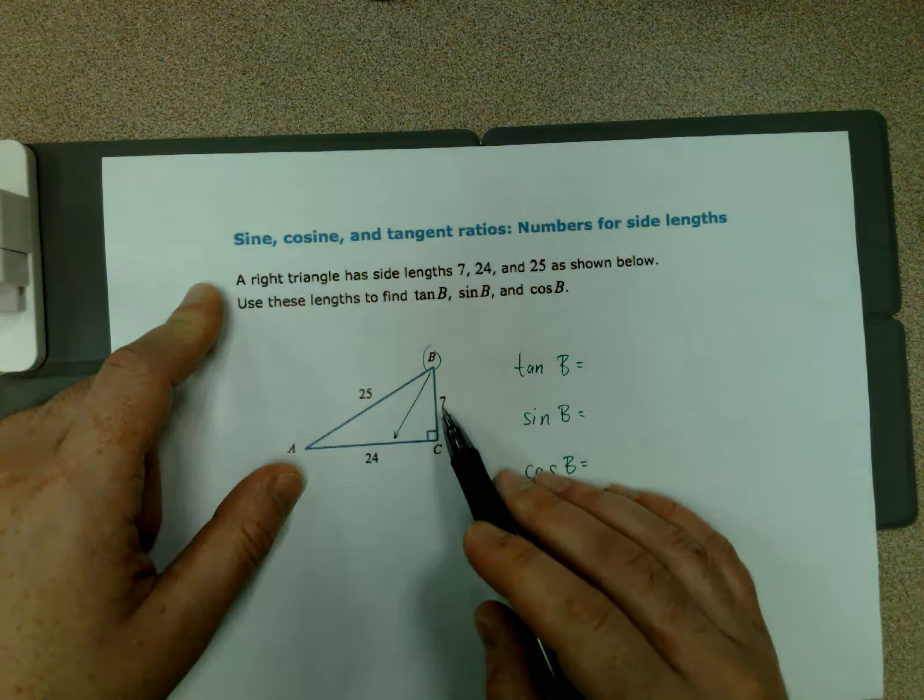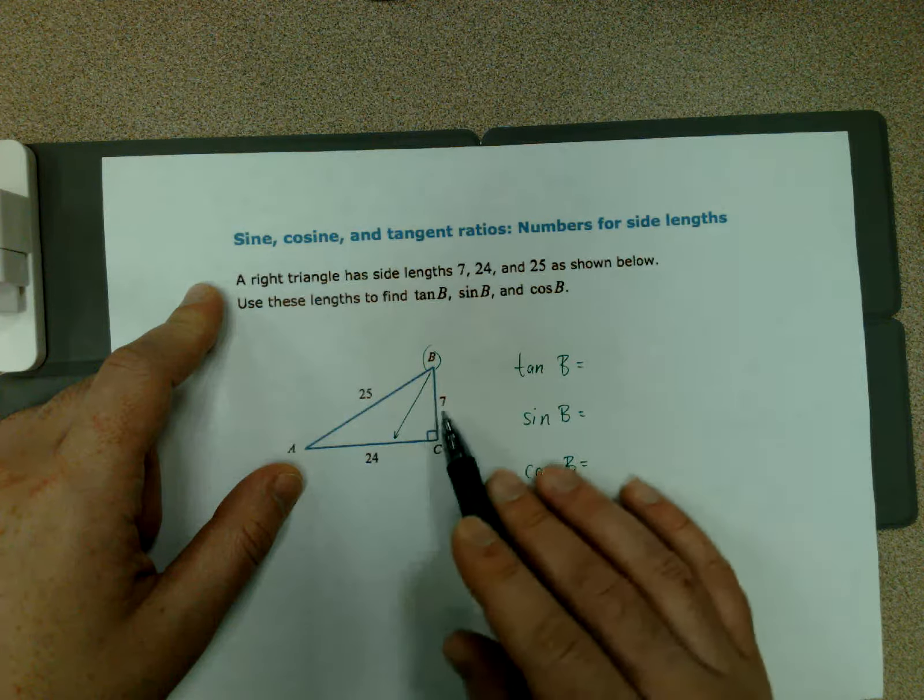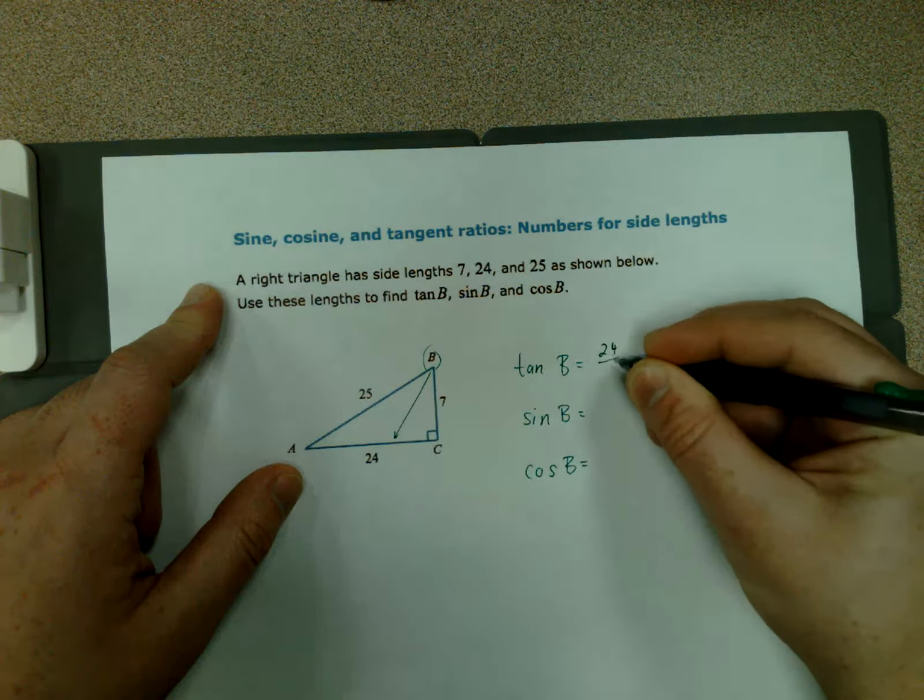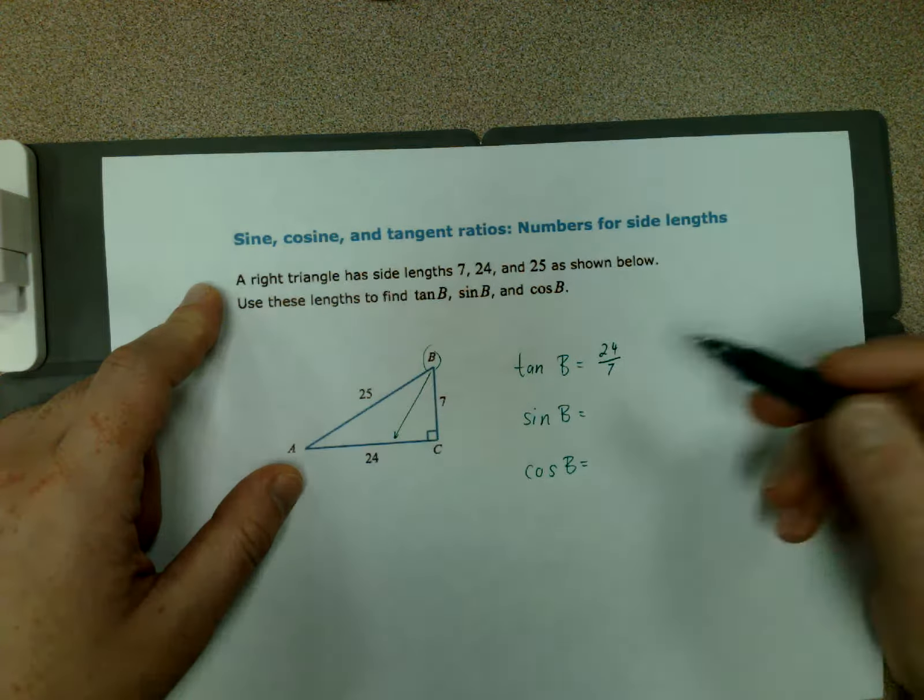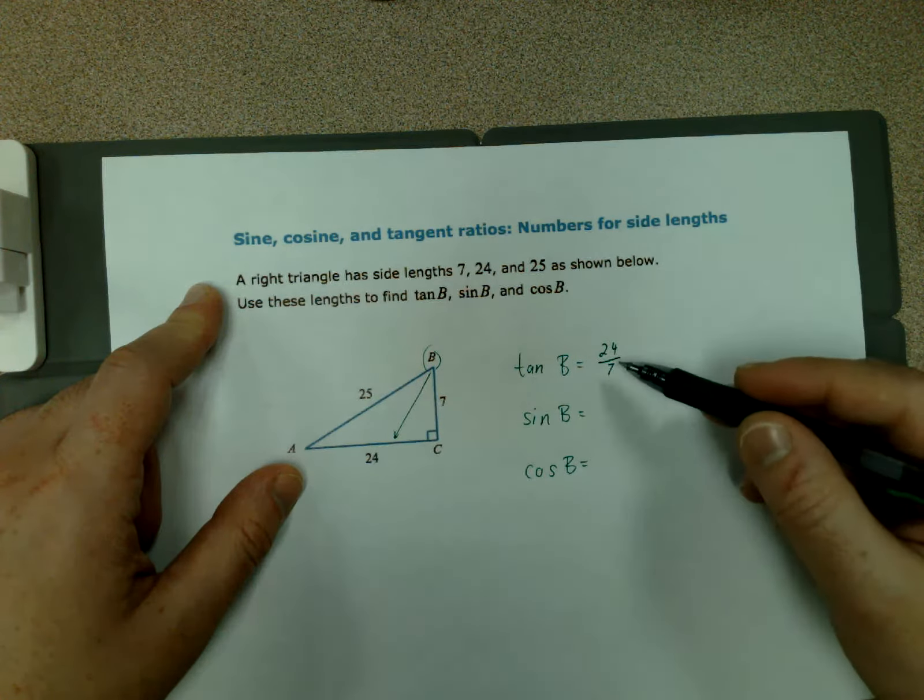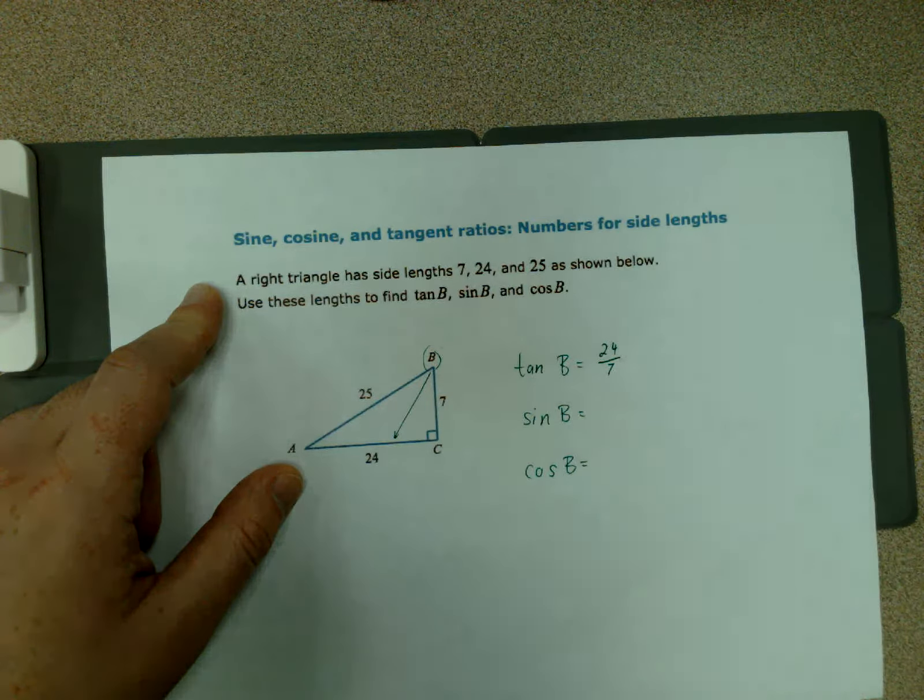So opposite over adjacent would be 24 over 7. We want to reduce if possible. This won't reduce as 7 is prime and 24 is not divisible by it.